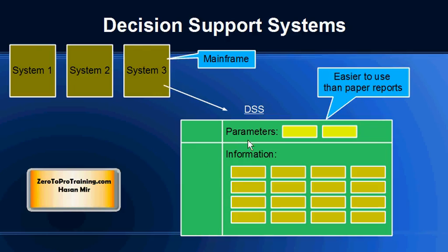This need resulted in something called a Decision Support System. Imagine the output of a DSS as a form with different parameters — for example, a parameter called 'month' and another called 'cost center.' A user could say: show me all the expenses that incurred in this cost center for this period. The user can change the parameter values and the data displayed on screen will change accordingly.